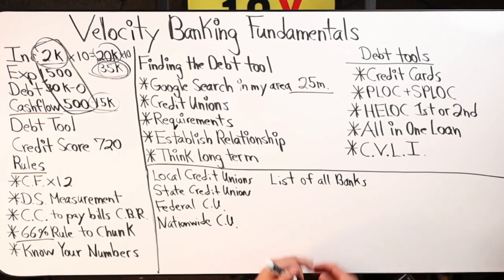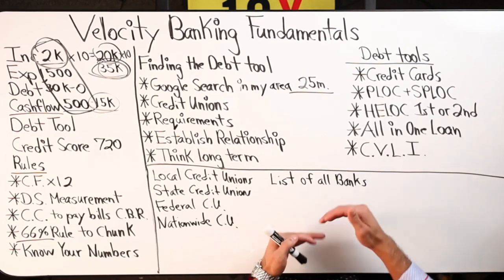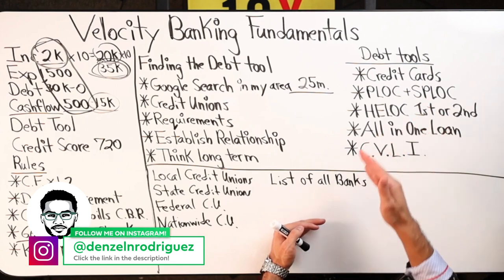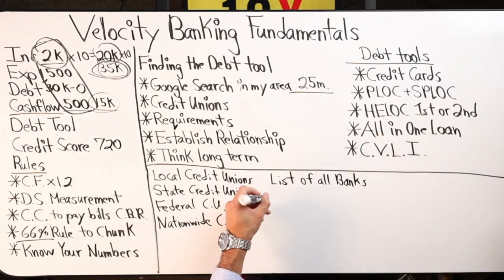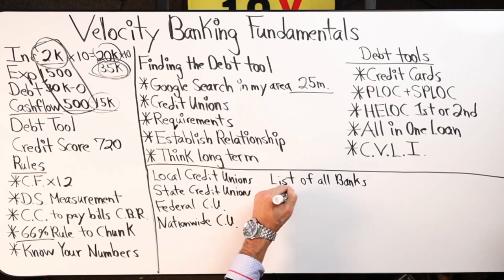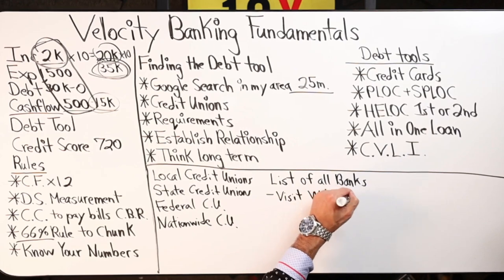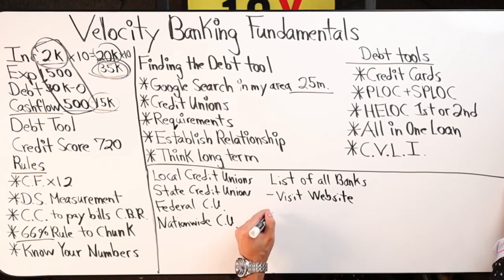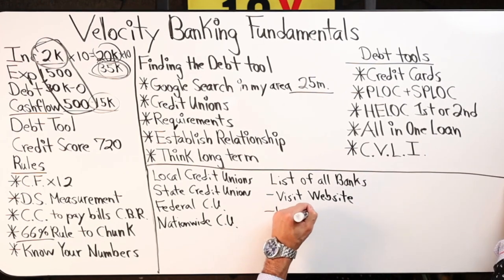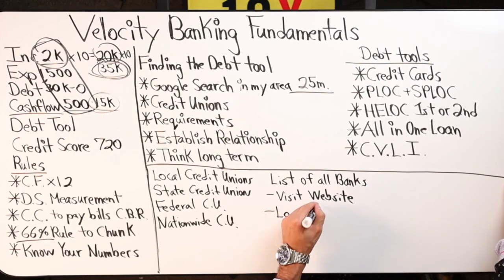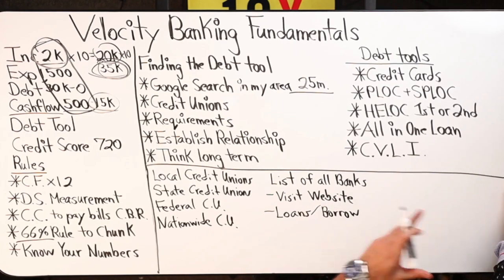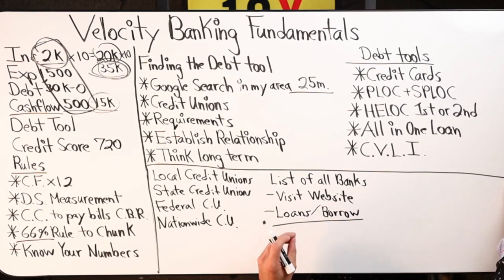Once I have my list, it's a matter of process of elimination. You are going to visit the website of each and every bank that is a credit union. You're going to click on the tab that says 'Loans' or it might say 'Borrow' — anything that says borrow, loans, personal loans. You're going to click on that because you're looking to see if they offer these tools.